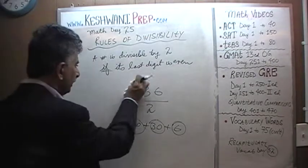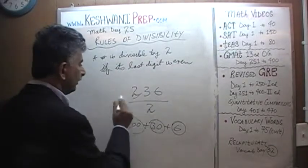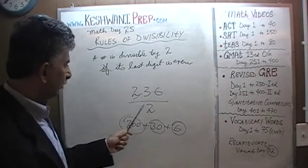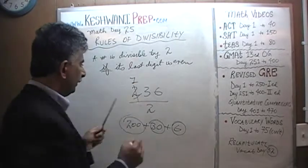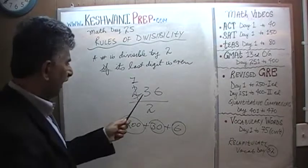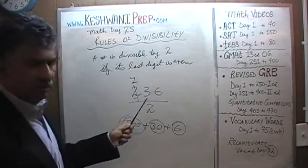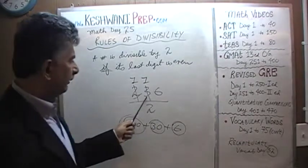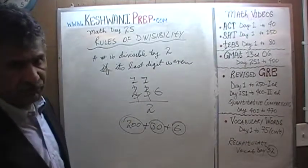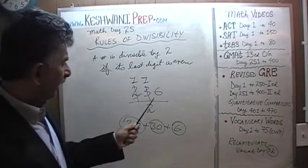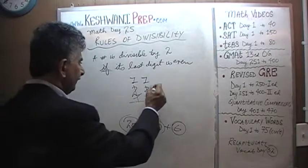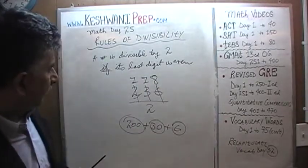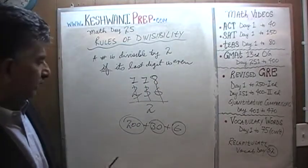Let's divide 236 by 2. How many 2s in 2? One. How many 2s in 3? One, with remainder 1. The answer is 118. 236 divided by 2 is 118.